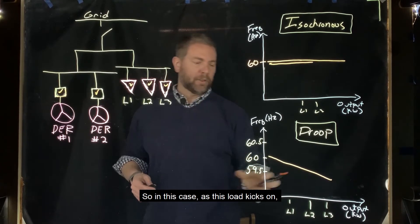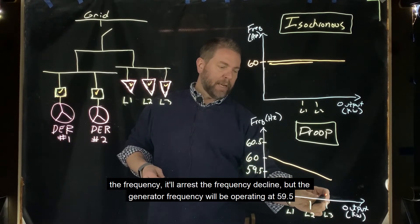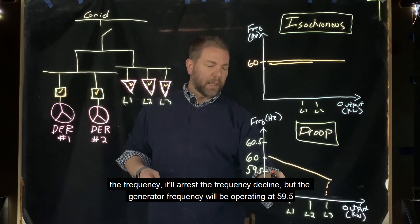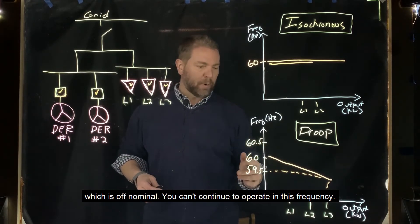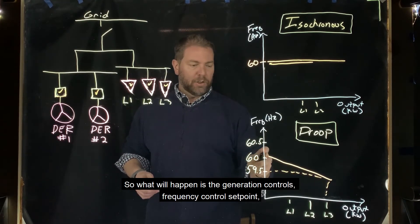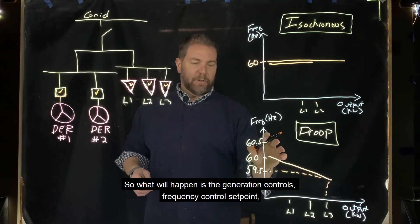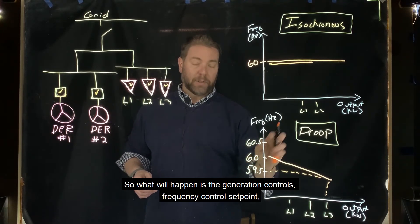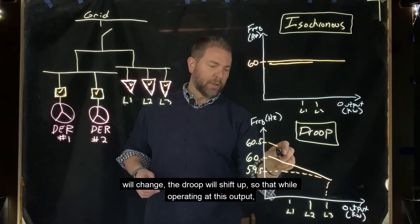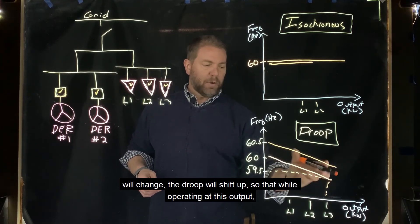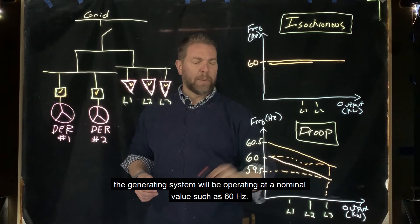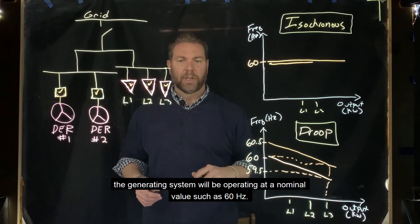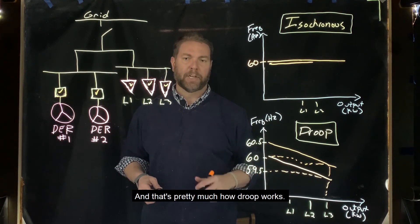As this load kicks on, the frequency will arrest the frequency decline, but the generator will be operating at 59.5 Hz, which is off nominal. You can't continue to operate at this frequency, so what will happen is the generation control frequency set point will change. The droop will shift up so that while operating at this output, the generating system will be operating at a nominal value such as 60 Hz. And that's pretty much how droop works.